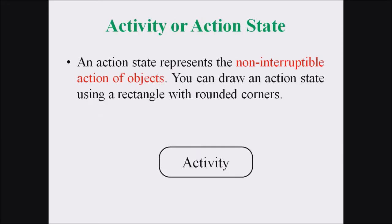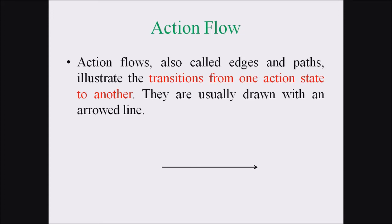The different symbols or notations in activity diagrams are detailed here. The first notation is activity or action state. An action state represents the non-interruptible action of an object, and we can represent it with a rectangle with rounded corners. The next notation is action flow, also called edge or path, which illustrates the transition from one action state to another. They are usually drawn with an arrowed line.